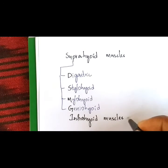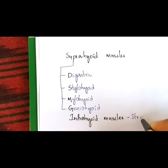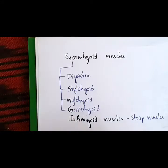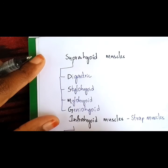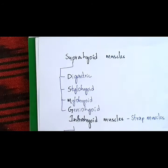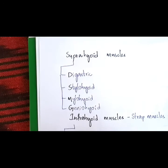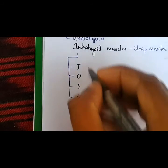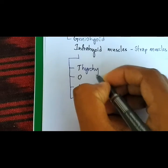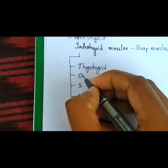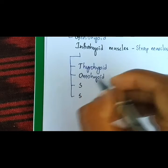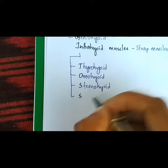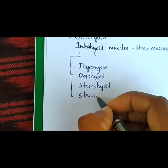The infrahyoid muscles are also called strap muscles. They are also four in number and the mnemonic is TOS. They are thyrohyoid, omohyoid, sternohyoid and sternothyroid.